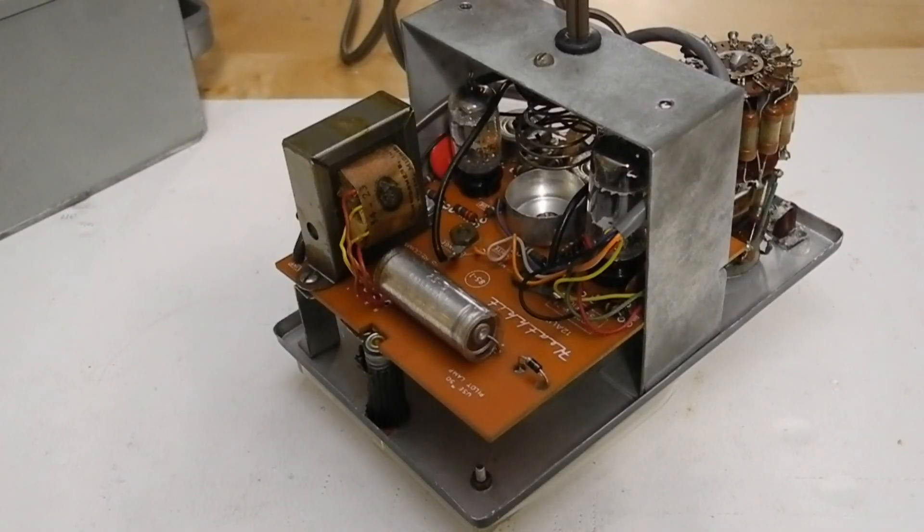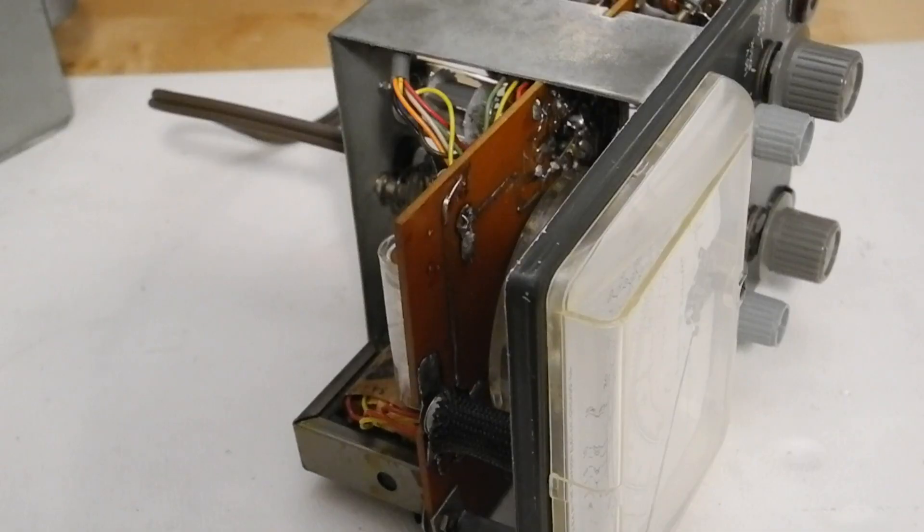You can see here the PCB used phenolic material rather than fiberglass as is usually used today. It's single-sided with no solder mask, but it does have silkscreen on the top. The traces tended to lift off if overheated or soldered several times. This was likely an issue if a kit builder used a 100-watt soldering gun to assemble it.